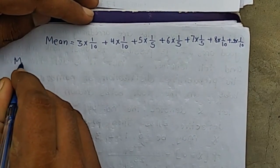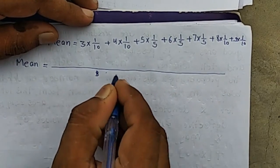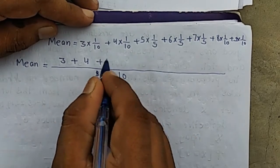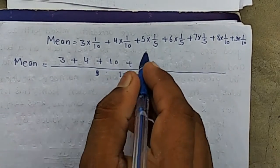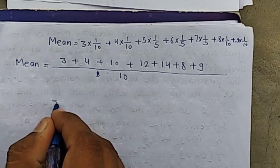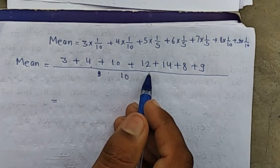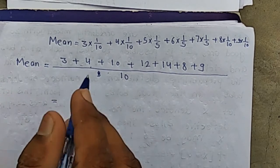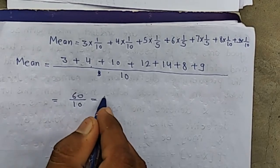Taking the common denominator of 10, we get: (3 + 4 + 10 + 12 + 14 + 8 + 9) / 10 = 60/10. Therefore, the mean equals 6.